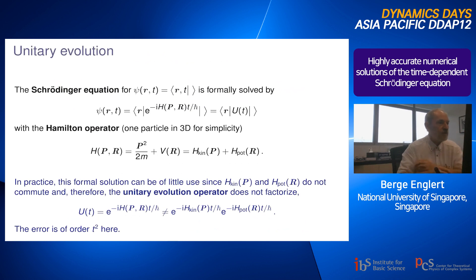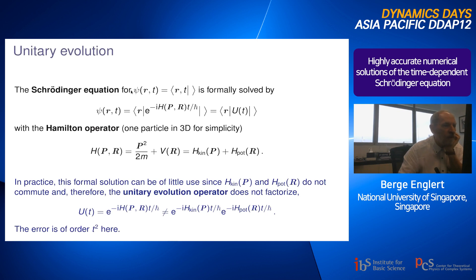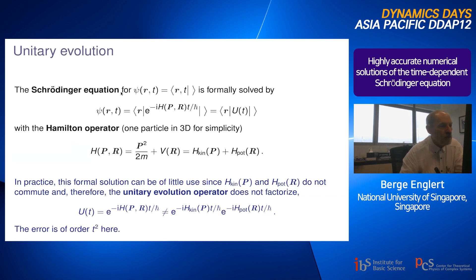To get started, if we have a Schrödinger equation to solve for a wave function, one way of doing this is using the unitary evolution operator that advances you by time t from the initial state to the final state. This has an exponential structure, and in the exponent you have the Hamiltonian operator.